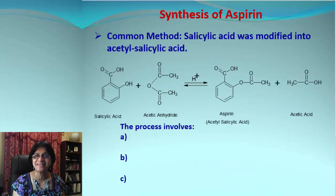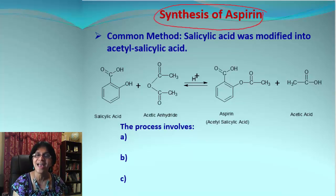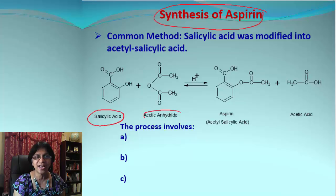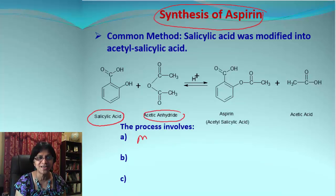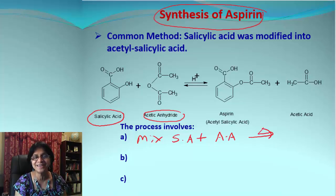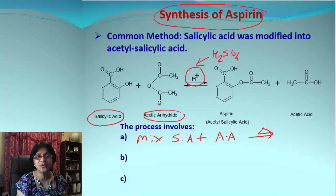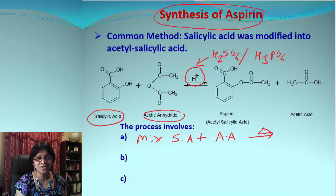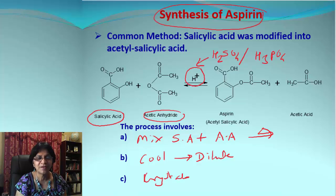Since salicylic acid was causing serious side effects, people thought about synthesizing what we know today as aspirin. For that, they used salicylic acid as the starting reactant and treated it with acetic anhydride. Step one in the process was mixing salicylic acid with acetic anhydride, heated in the presence of hydrogen ions, which came from sulfuric acid or phosphoric acid. After heating for a short time, the next step was to cool it, dilute with water, and then collect crystals of aspirin.